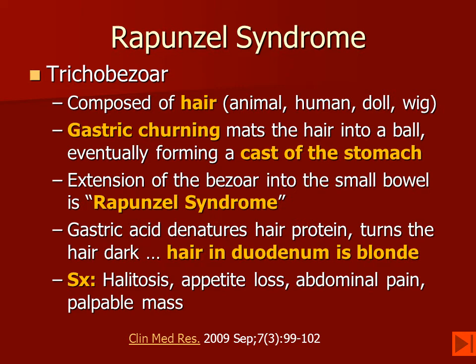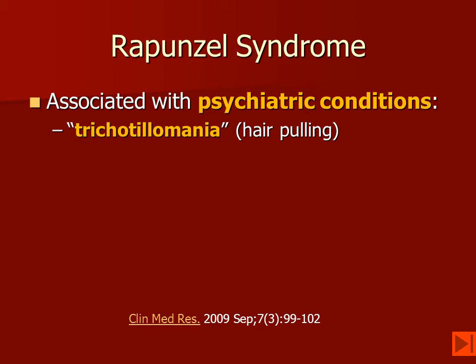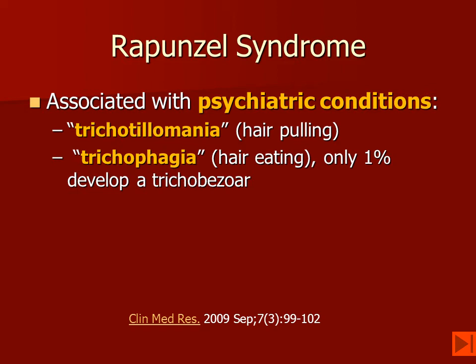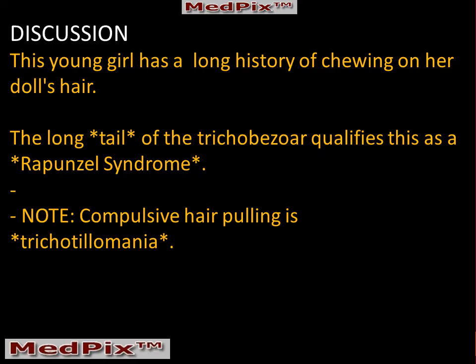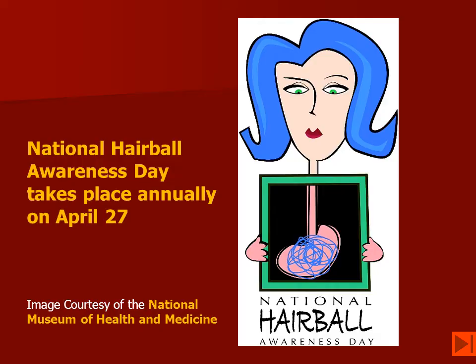Rapunzel syndrome is often associated with psychiatric conditions, including trichotillomania or hair pulling, and trichophagia or hair eating. Only about one percent of patients who have trichophagia will actually develop a trichobezoar. The condition is much more common in female patients, presumably because they have longer hair, and it typically presents between 13 and 20 years of age. This young girl had a long history of chewing on her doll's hair, and the tail of the trichobezoar extending into the small bowel qualifies this as Rapunzel syndrome.